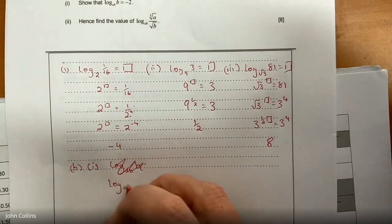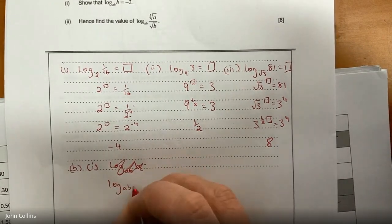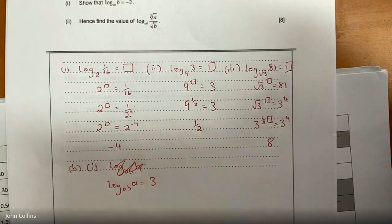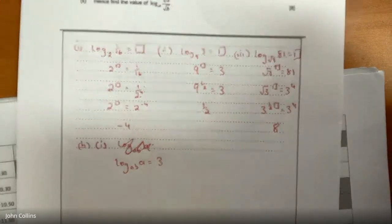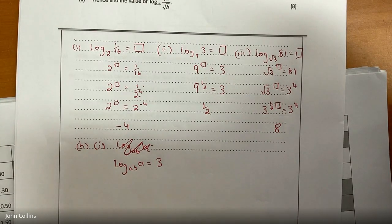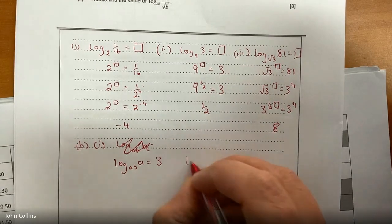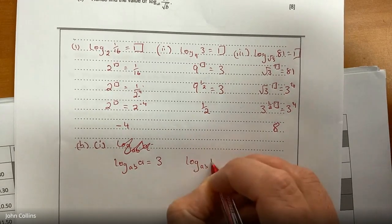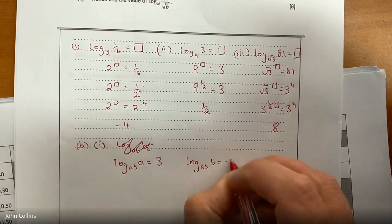Log base AB of A is equal to 3. We need to show that log base AB of B is equal to negative 2.